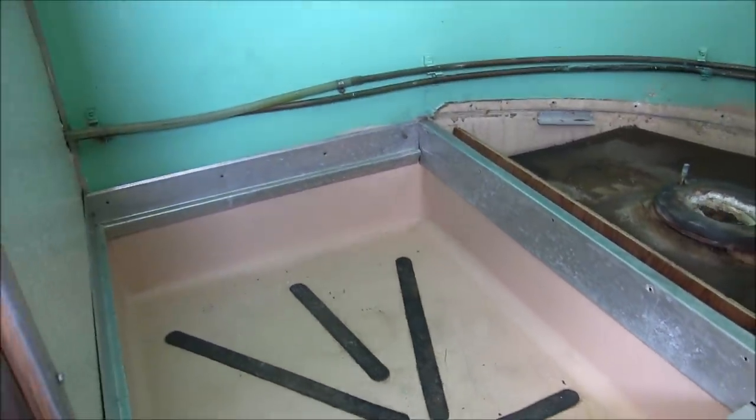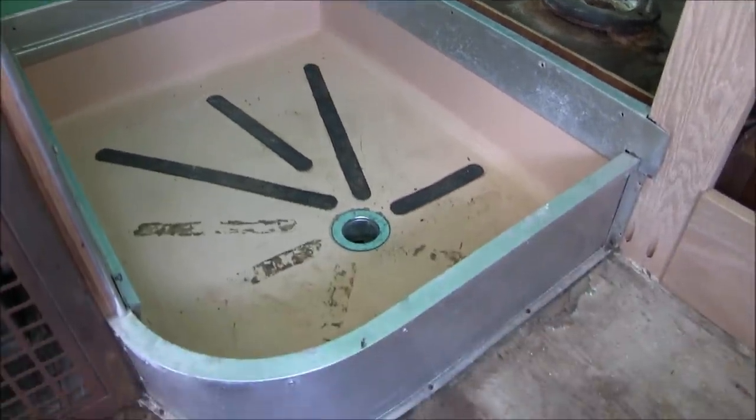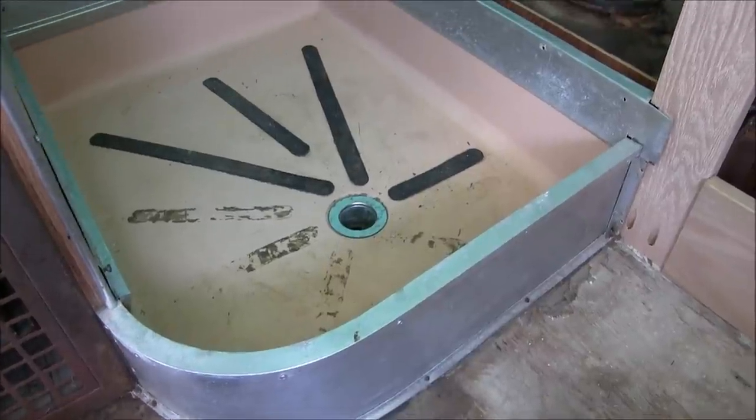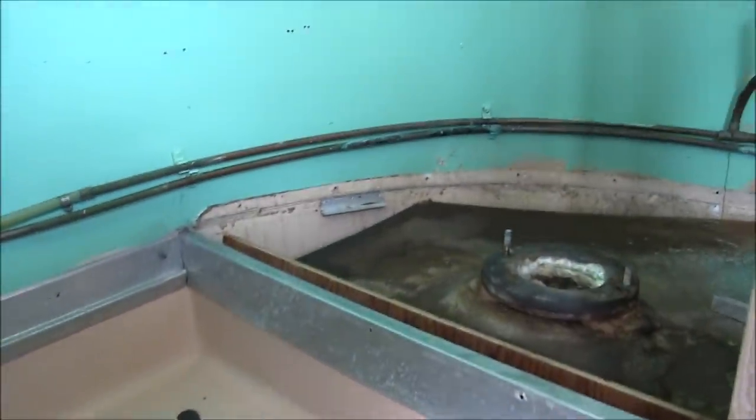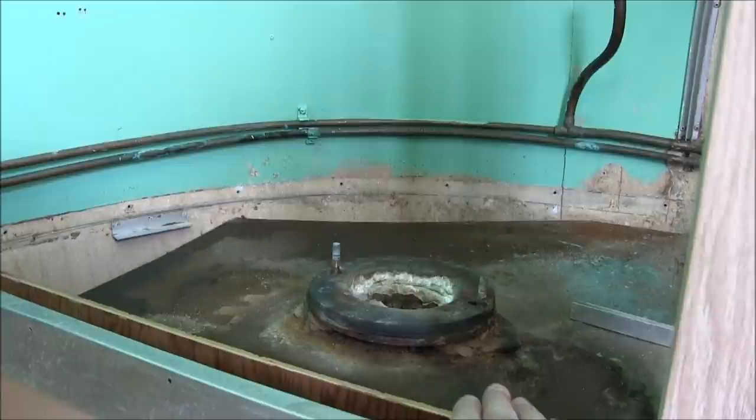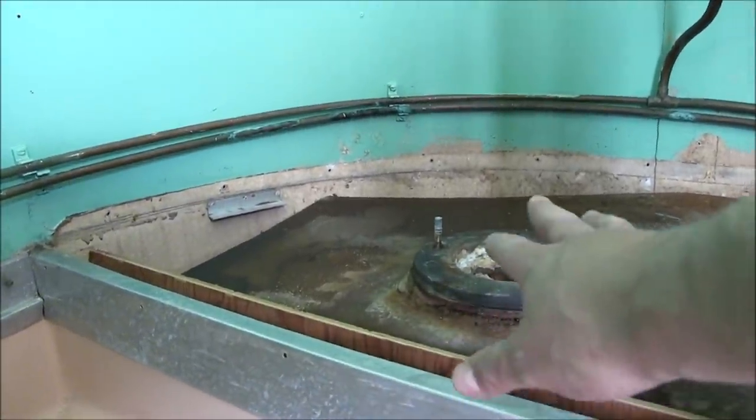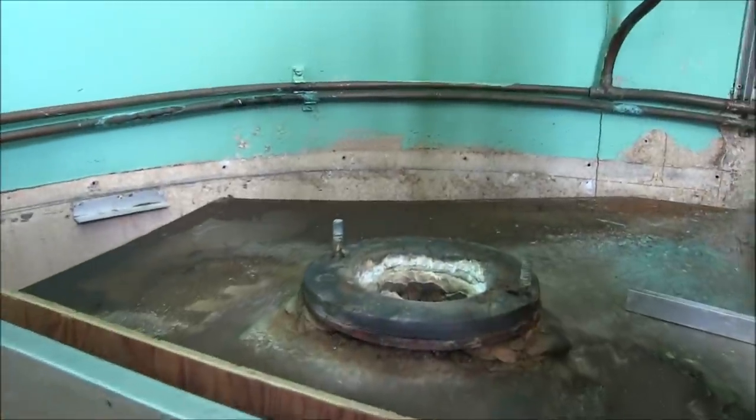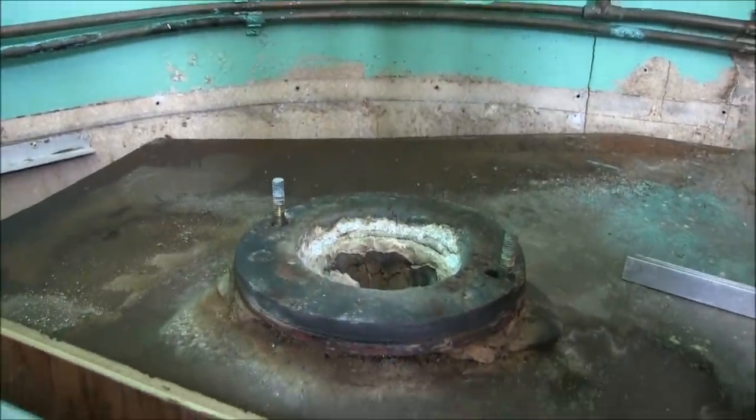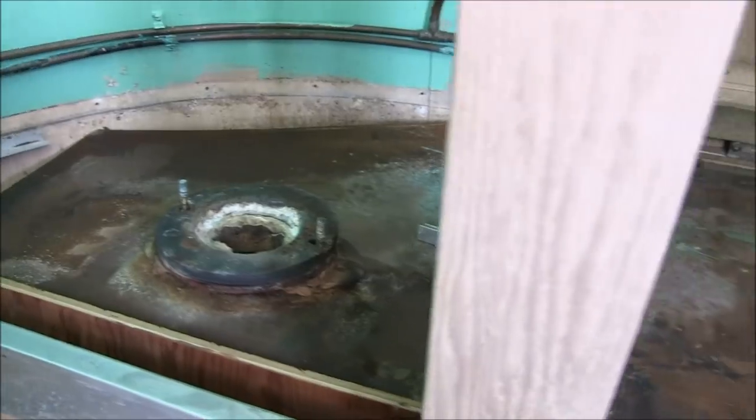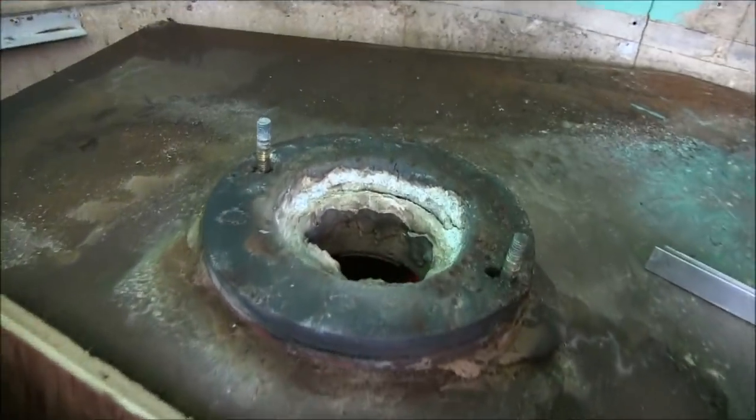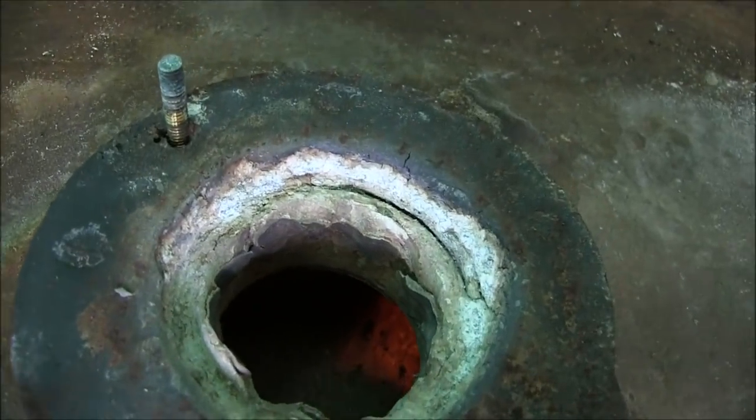But before I do that, I have to remove all the aluminum trim that's around the outside. And in the previous video, I had removed the top of this ledge here where the toilet sits. And the toilet would bolt into this flange that goes directly into the black tank.